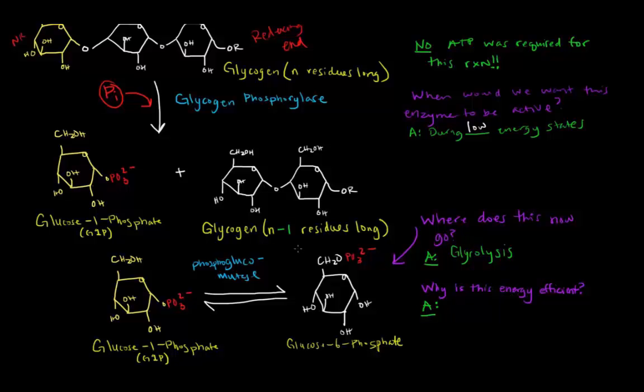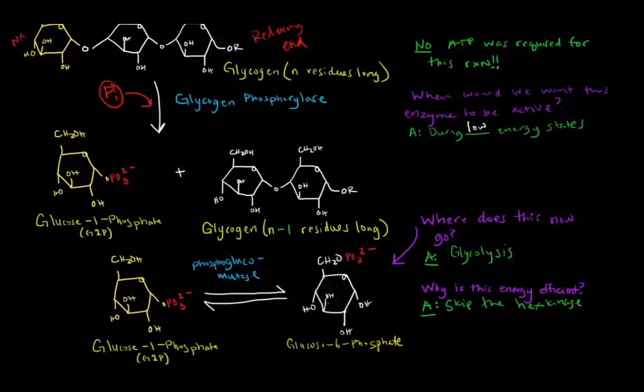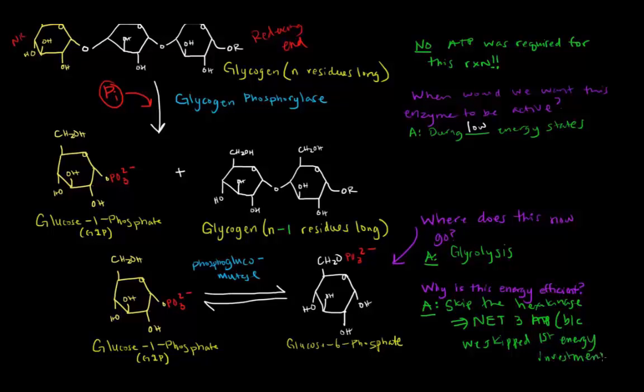Now, this is actually particularly energy efficient. And why is that? Well, the reason why is because this G6P allows us to skip the hexokinase step. If you recall, the hexokinase step invested in ATP to get this G6P here. In this case, when we break off a glucose from glycogen, we skip that hexokinase step. So we end up skipping the first investment step. So what ends up happening is that we end up overall, we still have to invest an ATP at the phosphofructokinase step. But then we have the reactions later to create 4 ATP. So now we net 3 ATP, because we skipped the first energy investment.